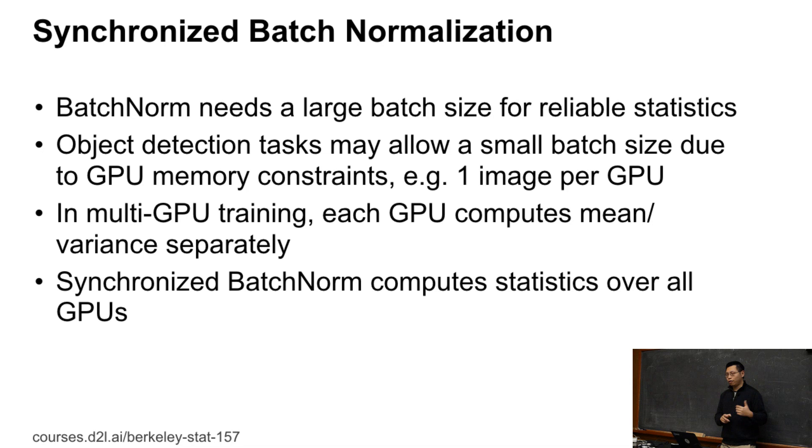So synchronized batch norm, which means in the multi-GPU training, I will compute the mean and the variance across all these GPUs. So if I have eight GPUs, one image per GPU, then I will compute the mean and the variance for the eight images we have. That gives you like maybe slows down your computation because you need to pay the synchronization cost, but at least you get stable batch norm statistics here. This is commonly used for detections and segmentation.